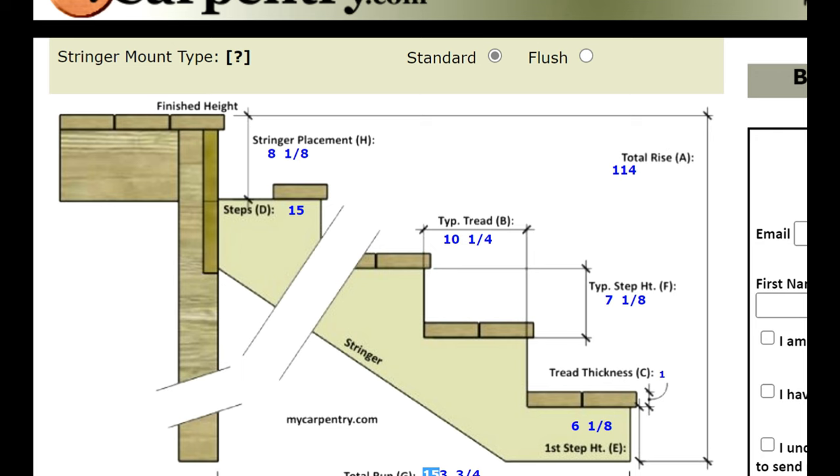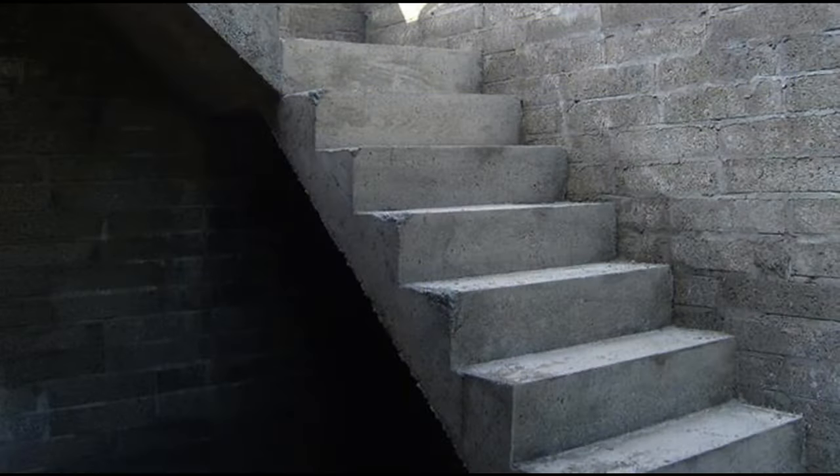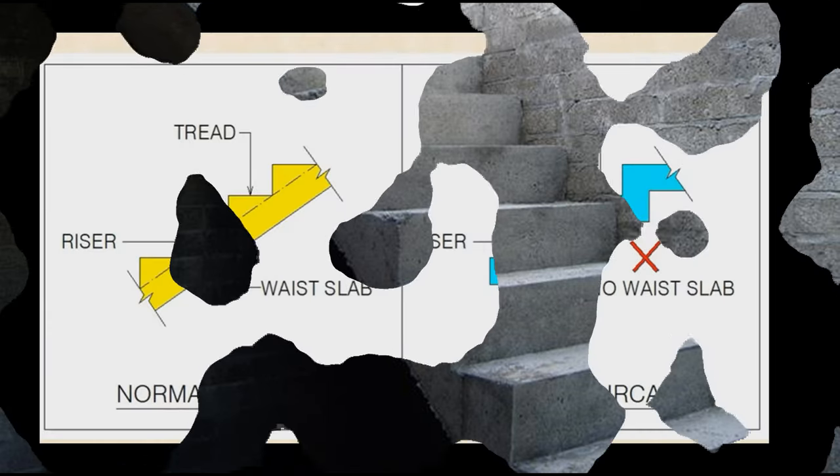So the only question now is how do we construct it? Typically stairs in small houses are constructed up against a wall at least one wall. So now you got your placement done, calculations for your stairs done.